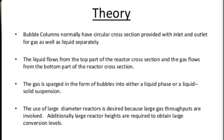Today we are discussing bubble column bioreactors. The bubble column bioreactor normally has a circular cross section provided with inlet and outlet for gas as well as liquid separately. The liquid flows from the top part of the reactor cross section and the gas flows from the bottom part of the reactor cross section.